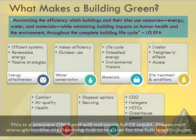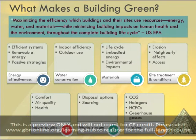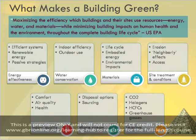Energy effectiveness includes consideration of efficiency in building systems and appliances, the introduction of renewable sources of energy, and passive strategies to reduce energy needs and consumption. Water conservation covers efficiency for indoor fixtures, alternative water supplies, and water use for irrigation and other outdoor uses.